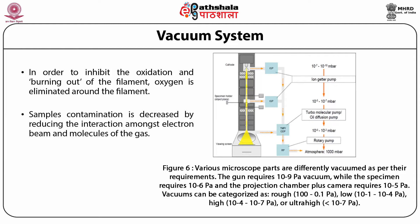Vacuums can be categorized as rough if the pressure range is between 100 to 0.1 pascal; low if between 10⁻¹ to 10⁻⁴ pascal; high for pressures between 10⁻⁴ to 10⁻⁷ pascal; and ultra-high for pressures less than 10⁻⁷ pascal.